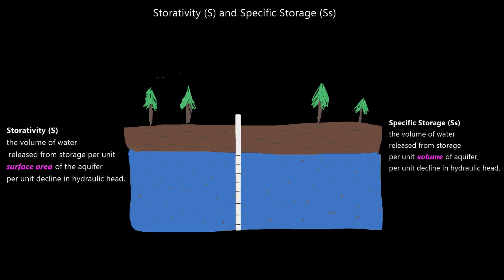I've given you the definitions for each on both sides and I'm going to draw them out. Storativity is the volume of water released from storage per unit surface area of the aquifer per unit decline in hydraulic head. Specific Storage is the volume of water released from storage per unit volume of the aquifer per unit decline in hydraulic head. You see the difference — one takes into account volume and the other surface area. It's a little easier to understand if I start with Specific Storage first.